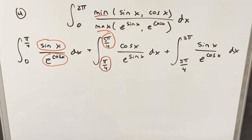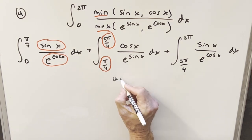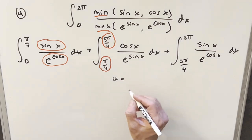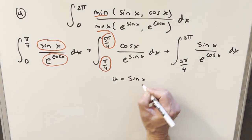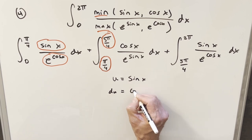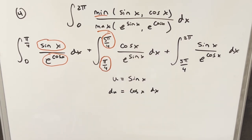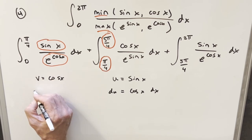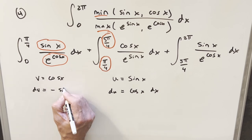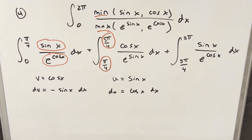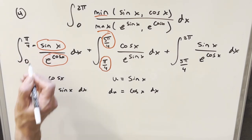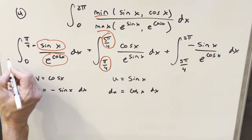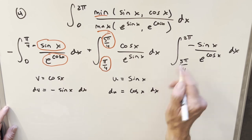Now all we need to do is integrate. Let's deal with the second integral first. For u substitution, let u equal sine x, so du equals cosine x dx — exactly what we have in the numerator. For the other integrals, we'll use a v substitution: v equals cosine x, so dv equals minus sine x dx. Since we don't have the minus sign, we'll create it by bringing a minus out front of those integrals.